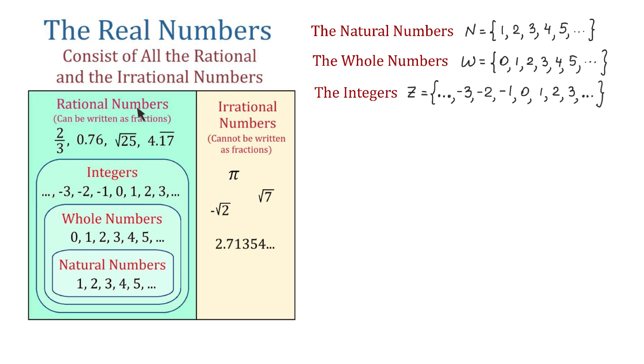The rational numbers are the numbers that we can write as fractions where both the numerator and the denominator are integers and the denominator is not zero. To represent these numbers we use letter Q, and to describe it we need to use the set builder notation. So we will write that this set includes all the numbers of the form A over B, where A and B are integers and B is not equal to zero.